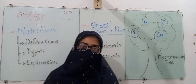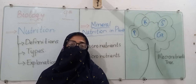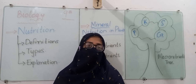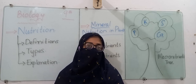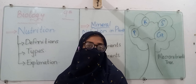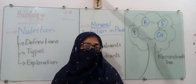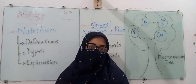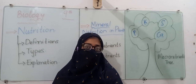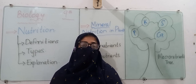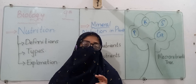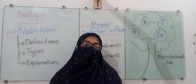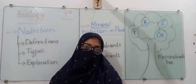Moving forward, we will discuss nutrition in plants. First we will talk about nutrition in plants and then eventually move to nutrition in animals, specifically in human beings. Regarding mineral nutrition in plants: plants can prepare their own food and are called autotrophs, but sometimes plants and animals require certain amounts of minerals in their diet so they can carry out the necessary functions related to their bodies.